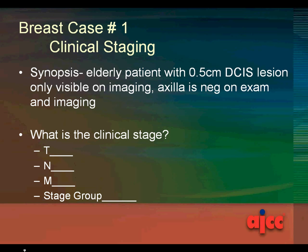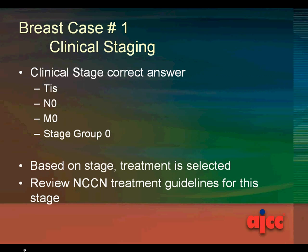What is the clinical stage — the T, the N, the M, and the stage group? The correct answers: the clinical stage is TIS, N0, M0, stage group 0.